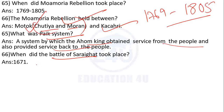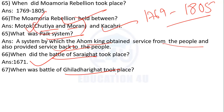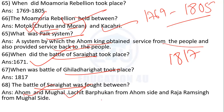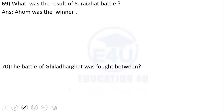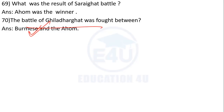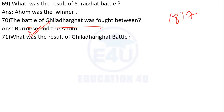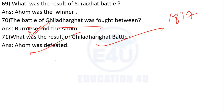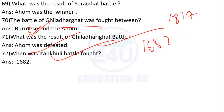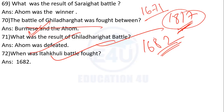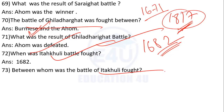The Battle of Saraighat was fought in 1671. The Ahom-Burma war was fought in 1817. The Battle of Itakhuli in 1682 — during this battle the Ahoms defeated the Mughals.